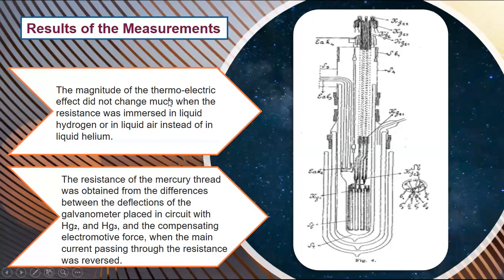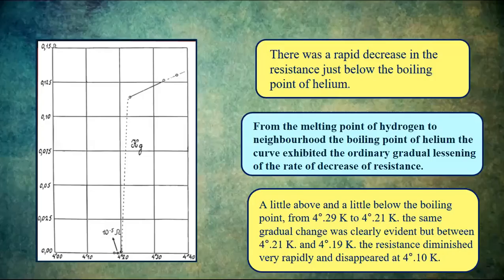Here are the results of the measurements. It was seen that the magnitude of the thermoelectric effect did not change much when the resistance was immersed in liquid hydrogen instead of in liquid helium. Also, the resistance of the mercury thread was obtained from the difference between the deflections in the galvanometer placed in the circuit with HG2 and HG3 when the main current passing through the resistance was reversed.